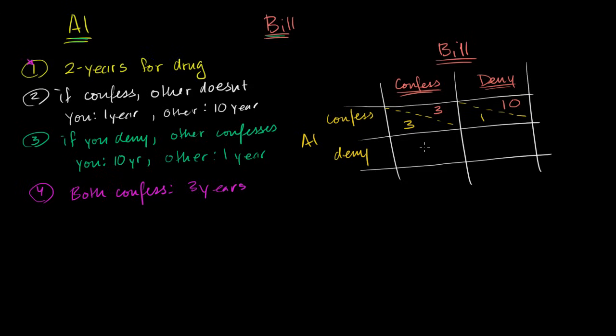If the opposite thing happens, if Bill confesses and Al denies, then it goes the other way around. Al's going to get 10 years for not cooperating. And Bill's going to have a reduced sentence of one year for cooperating.